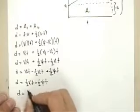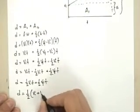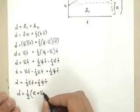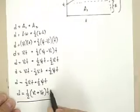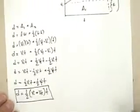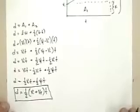So in simplifying this, I'm going to drag out my 1 half. And I'm going to separate my vi and my t as well, and my vf and my t. So there we go. There is the proof for d equals 1 half vi plus vf, t.